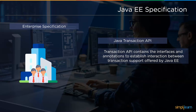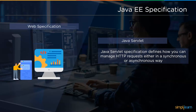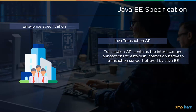Next we have the Java Transaction API. It consists of Java interfaces and annotations to establish interaction between Java transaction support offered by Java Enterprise Edition. The API abstracts from low-level details. Followed by the Java Transaction API, we have the Java Servlet. The Java Servlet specification defines how you can manage HTTP requests either in a synchronous or asynchronous way.